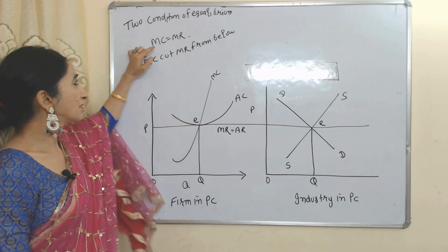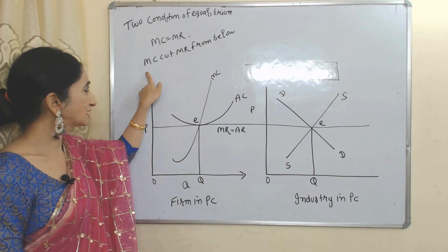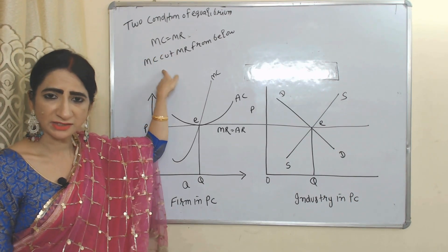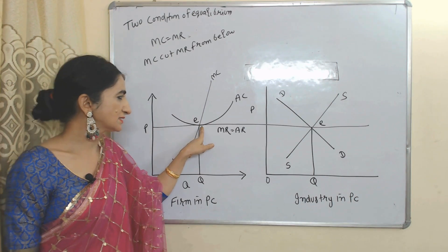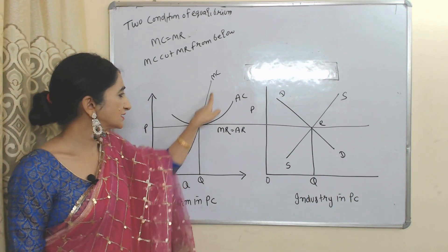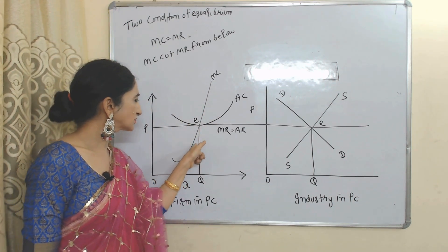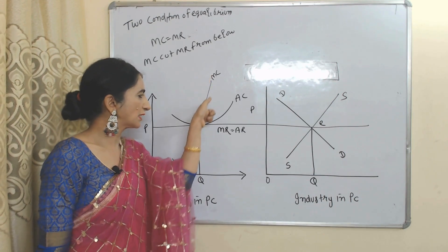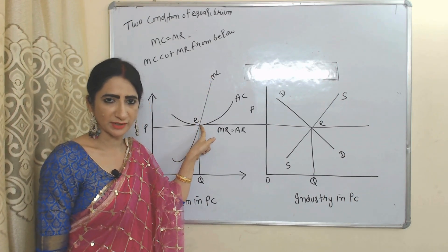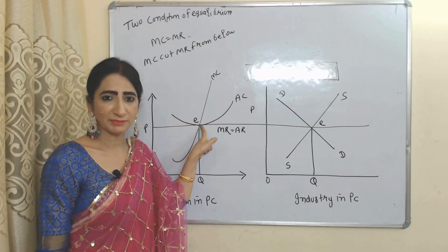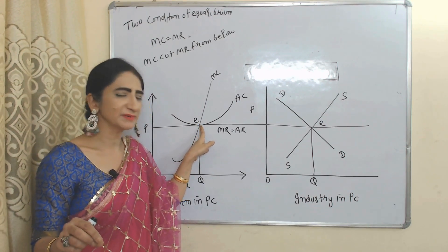During the long time period, there are two conditions of equilibrium. First, marginal cost equals marginal revenue. Second, marginal cost cuts marginal revenue from below. At point E, you can see marginal cost equals marginal revenue, and marginal cost is cutting marginal revenue from below. So we can say E is the equilibrium point of the firm during the long run under perfect competition.